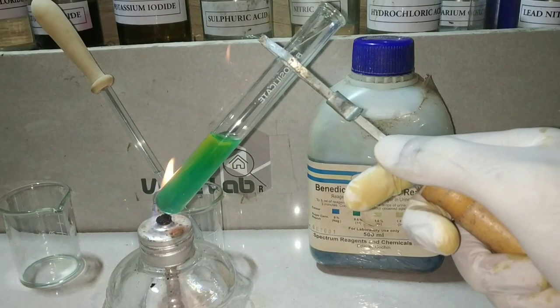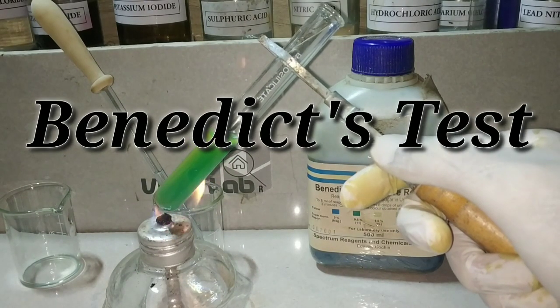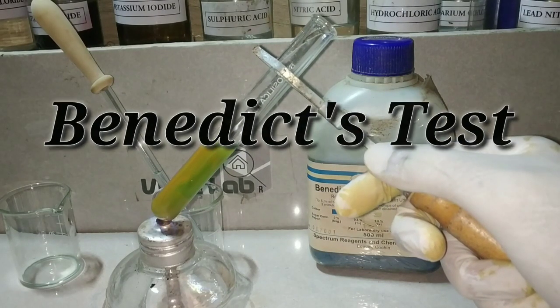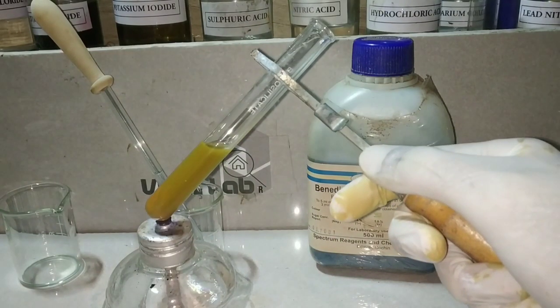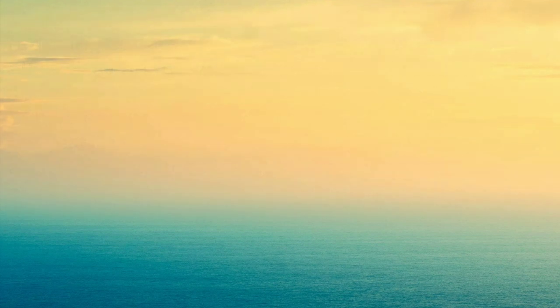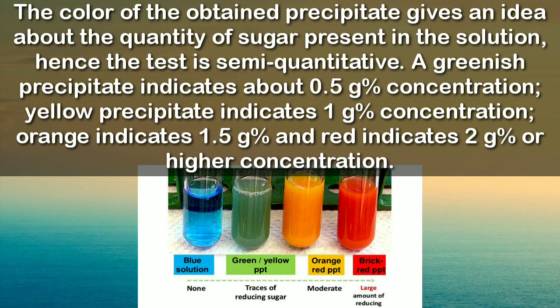Hello friends, today we would be doing the very famous Benedict's test for sugars. The principle behind this test is that when reducing sugars are heated in the presence of an alkali, they are converted into enediols, which reduces the cupric compounds present in the Benedict's reagent to cuprous compounds, which then get oxidized to form cuprous oxide.